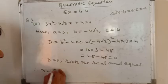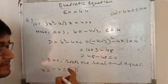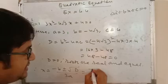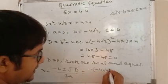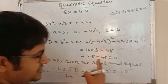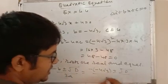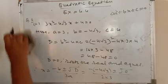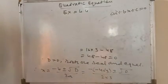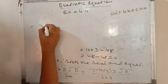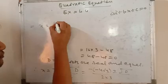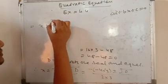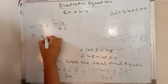Therefore x equals to -b ± √D, d means b² minus 4ac, by 2a. So minus, what is b? b is -4√3 plus minus √0, because d is equal to 0. Value of d equals to 0, so 2 by twice a. So it equals to 4√3 by 2 by 3, equals to 2√3 by 3.